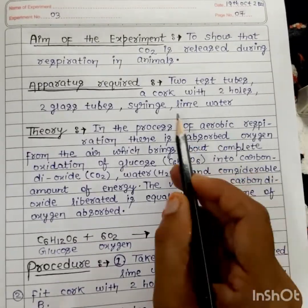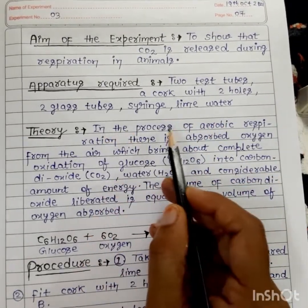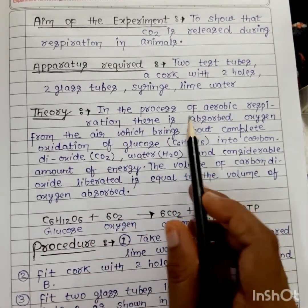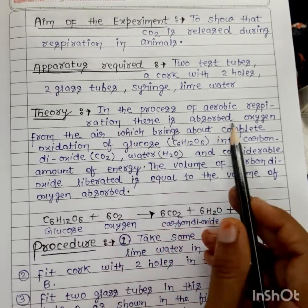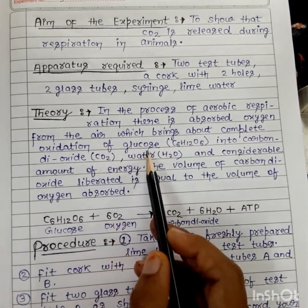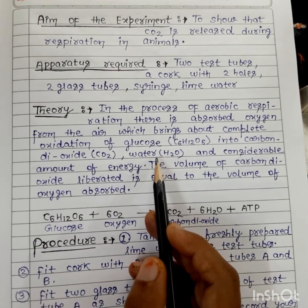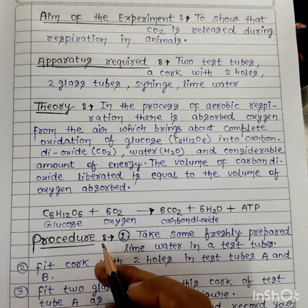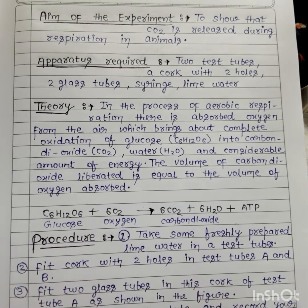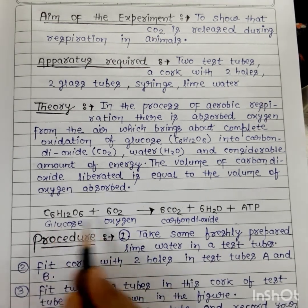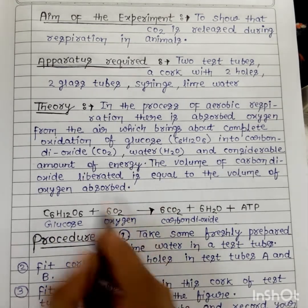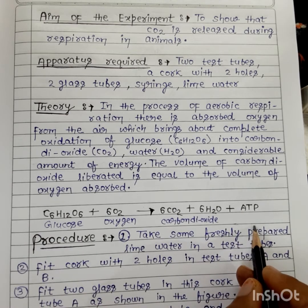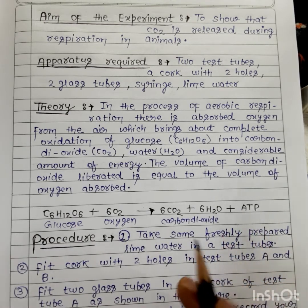For this we require two test tubes, cork with two holes, two glass tubes, syringe, and lime water. In the process of aerobic respiration, absorbed oxygen brings about complete oxidation of glucose. The simplest form after digestion is glucose, which combines with oxygen to release energy, producing CO2, H2O, and ATP. ATP stands for adenosine triphosphate — it is a stored form of energy which gives energy to the body.